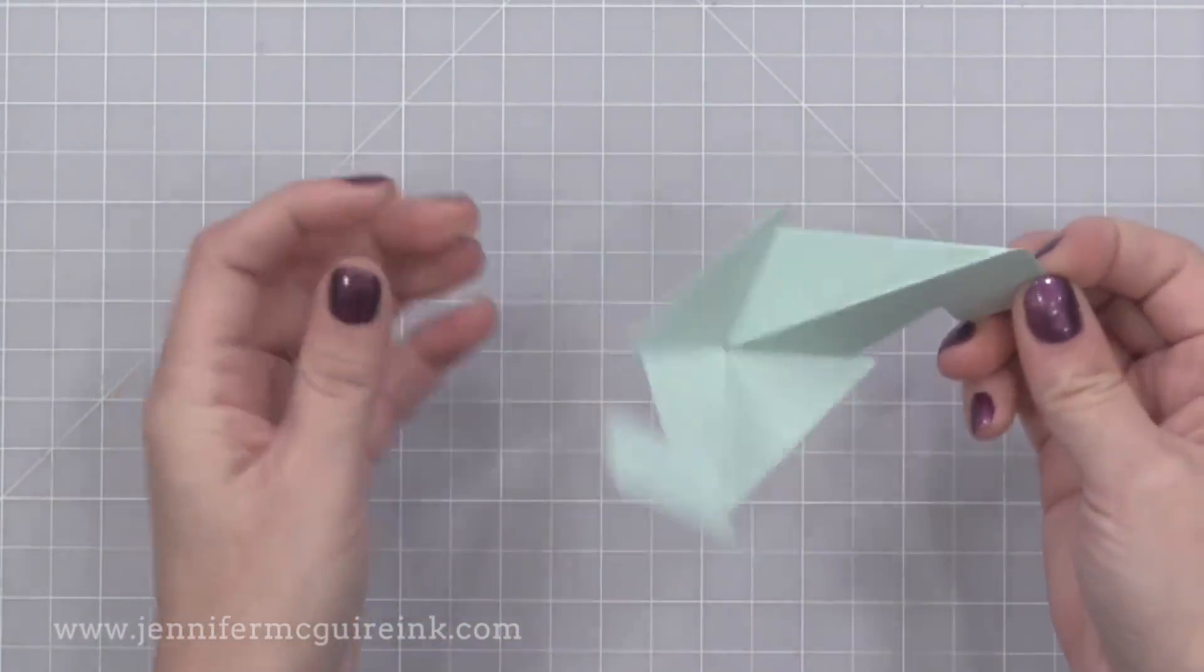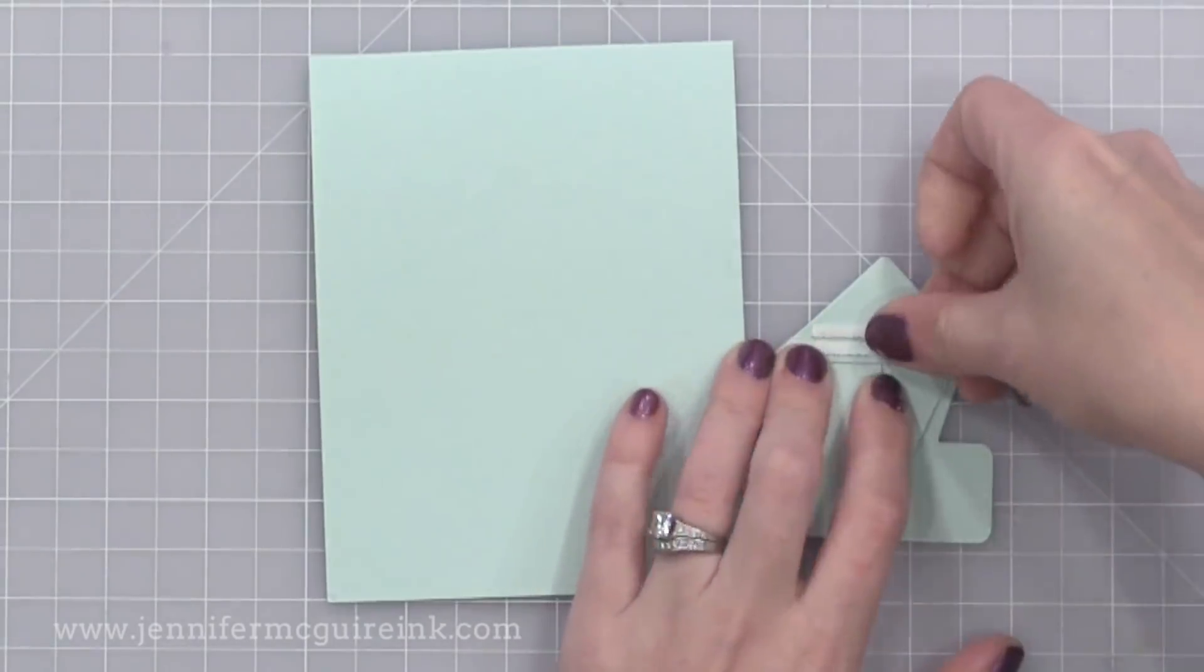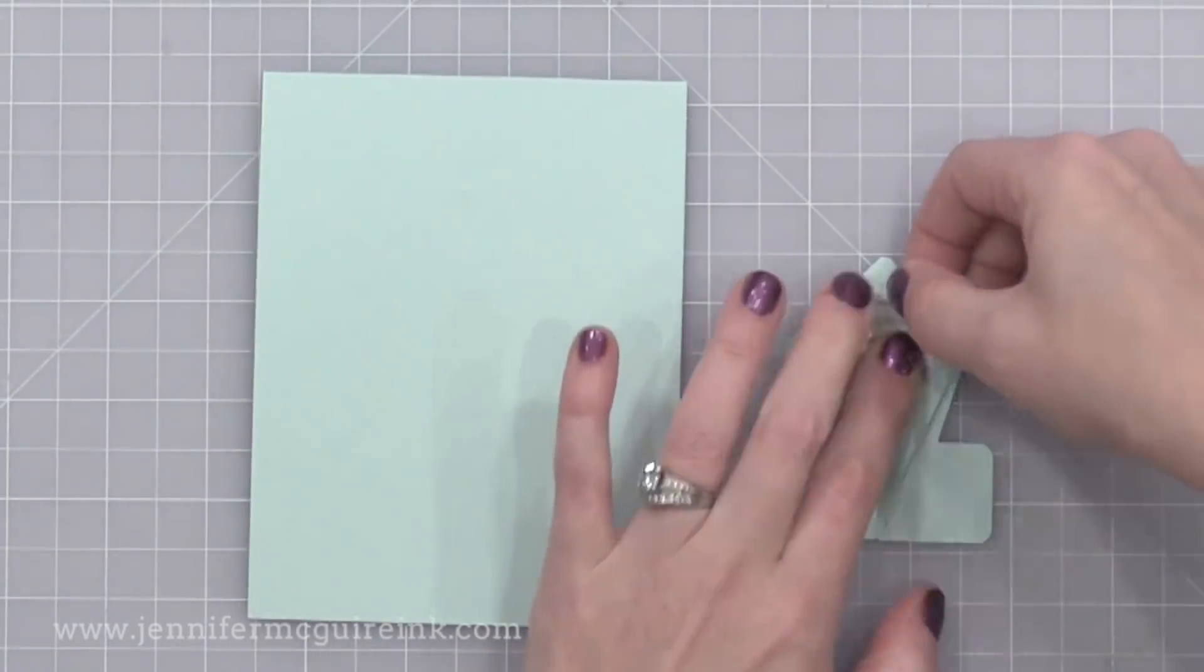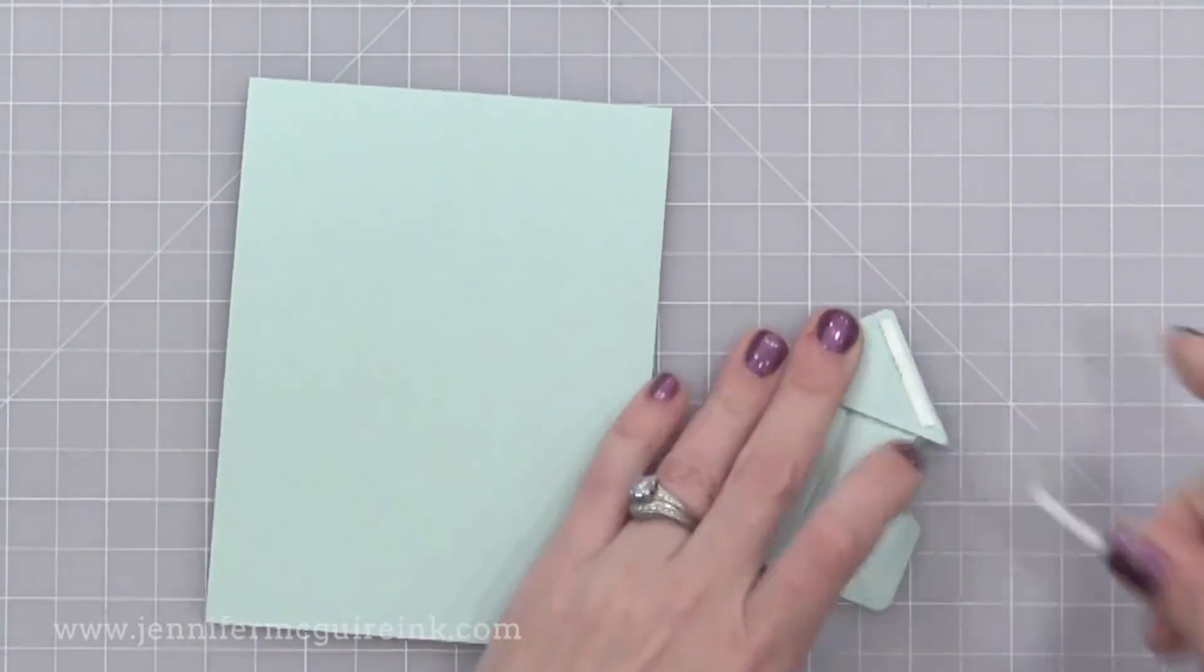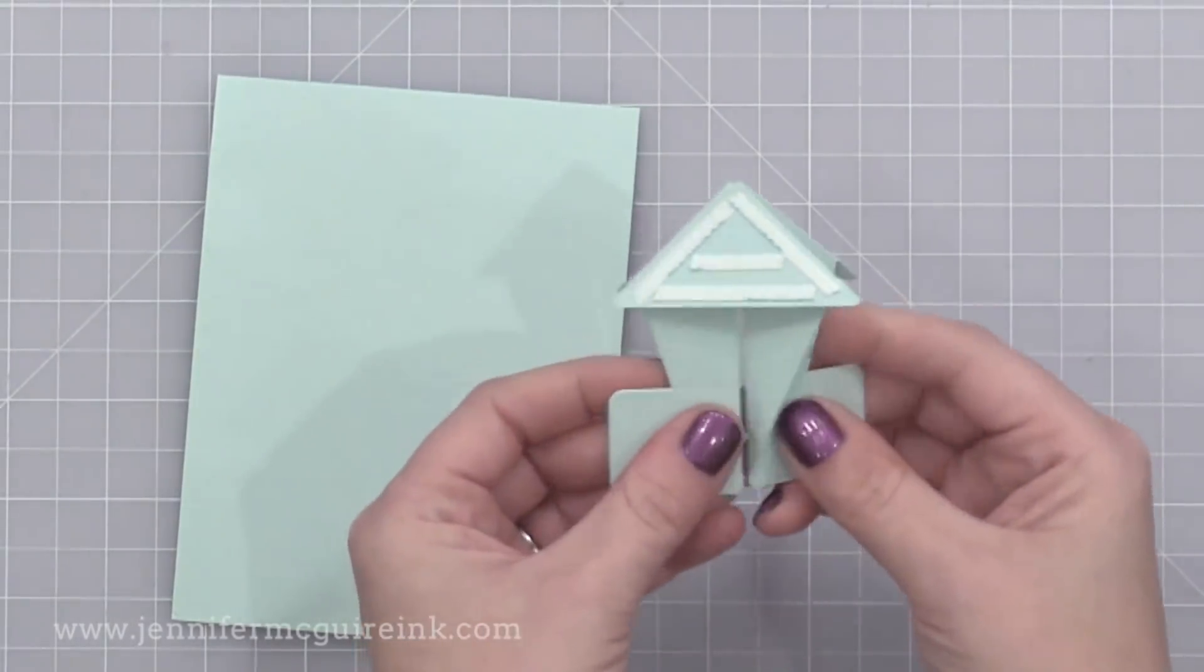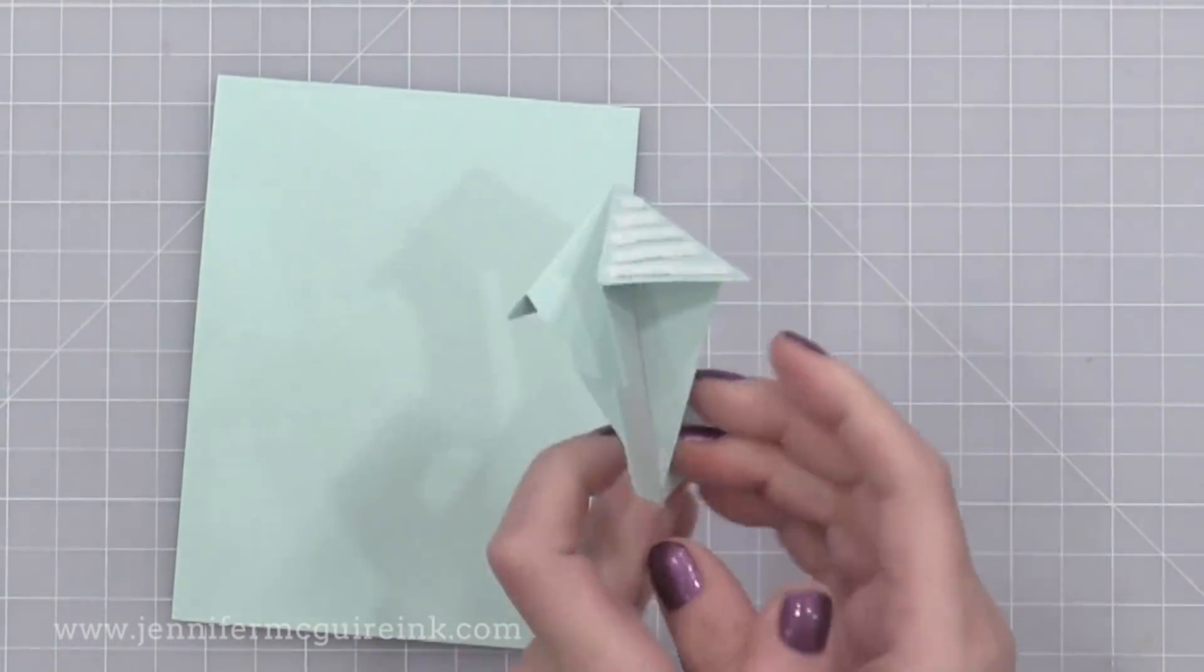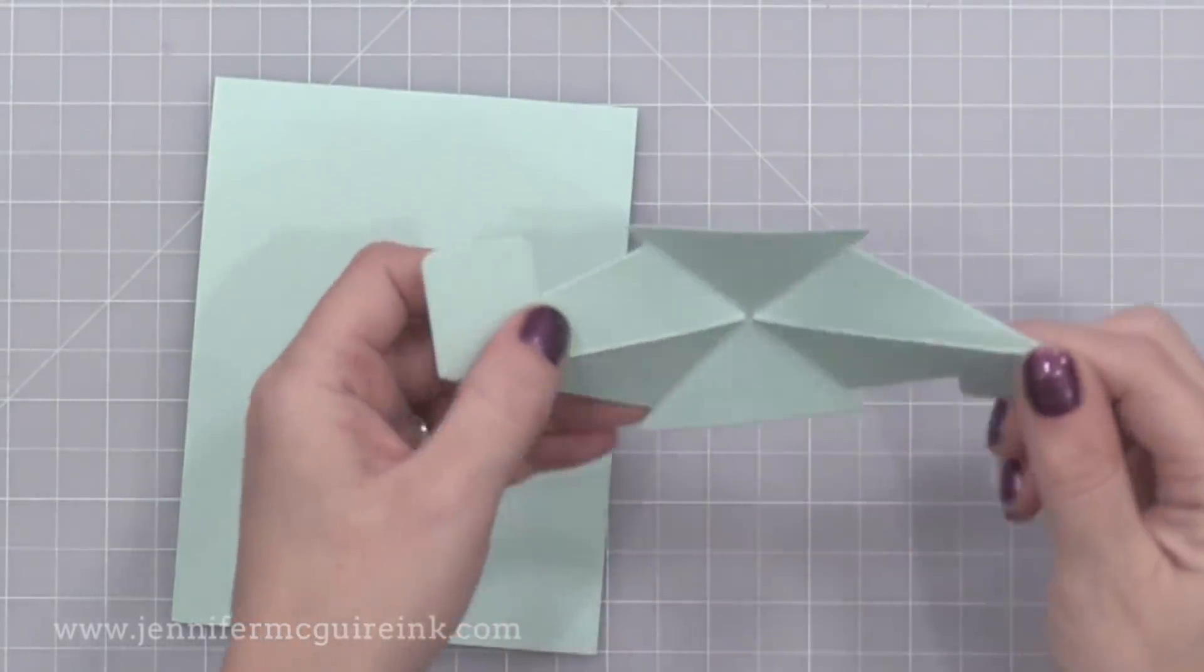Okay so now I have to adhere this to the inside of a card. I have a top folding four and a quarter by five and a half inch note card. You could do side folding, you could do whatever you want. Here I'm putting super strong double sided tape on the two triangles that are formed by this. So you can see I have adhesive on both sides. Now I can unfold this and we can add this into our card.